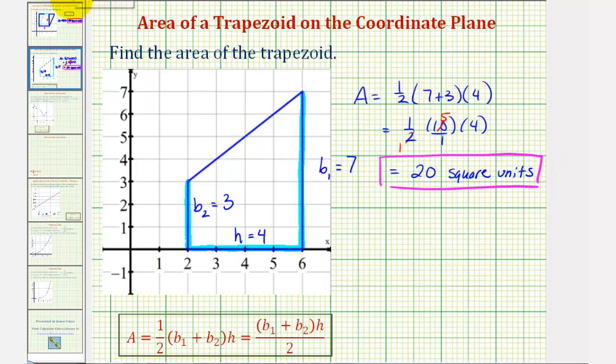Now I do want to show, if we did use the alternative formula here, where we divided by two instead of multiplying by one-half, the result would be the same. We'd have the area equals seven plus three times four divided by two. This would be ten times four divided by two, or forty divided by two, which still gives us twenty square units.